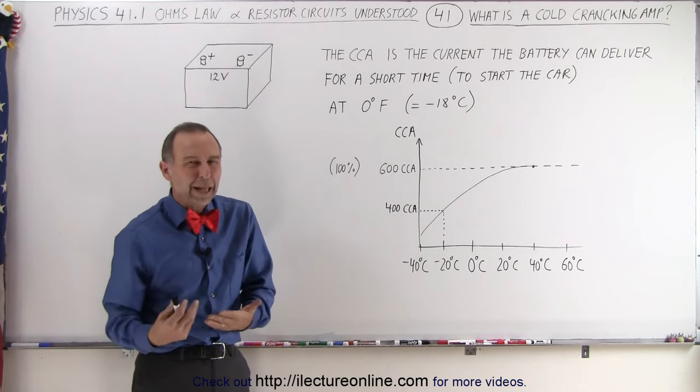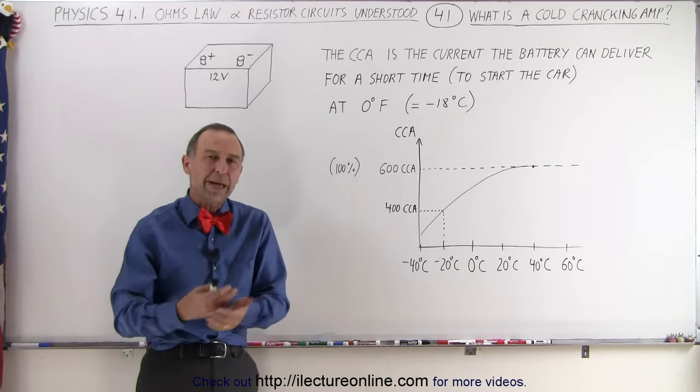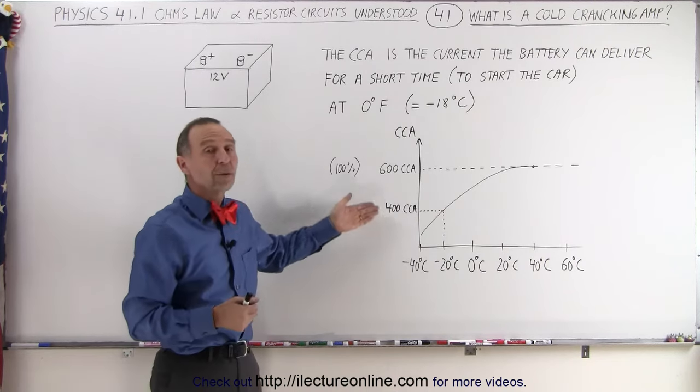Now, the older the battery gets and the worse shape the battery gets in, the lower this number will go as well. So new batteries are performing at their rating, but older batteries will actually drop in their ability to produce these kinds of currents.